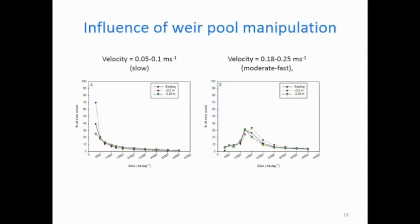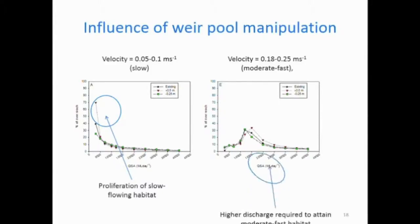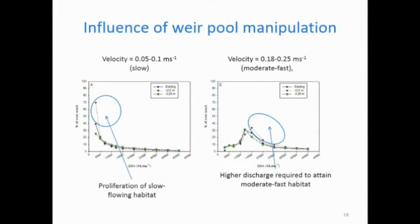We also looked at the influence of weir pool manipulation. At the bottom end of the river, if you raise the weir pool, it just makes things even slower. As you go higher, it makes a difference, but it's not a gigantic difference. But again, you need more water. If you raise the weir pool, you need more water to get the same conditions that you want. You could use this information to trade off whether it's better to raise the water level to increase watering of the trees and the other bank ecology, or whether it's better to lower it and increase the velocities.